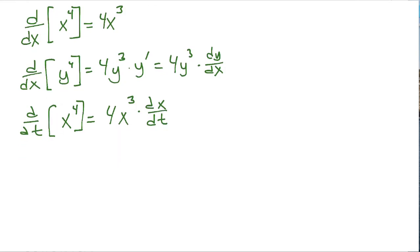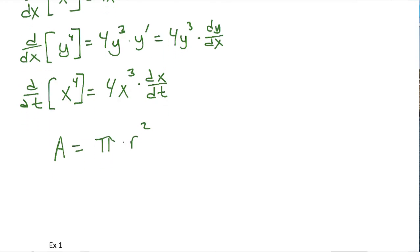Let's say I gave you an area equation, pi times the radius squared, and I said take this equation and differentiate it with respect to time. What we would have is dA/dt is equal to pi times 2R times dr/dt.